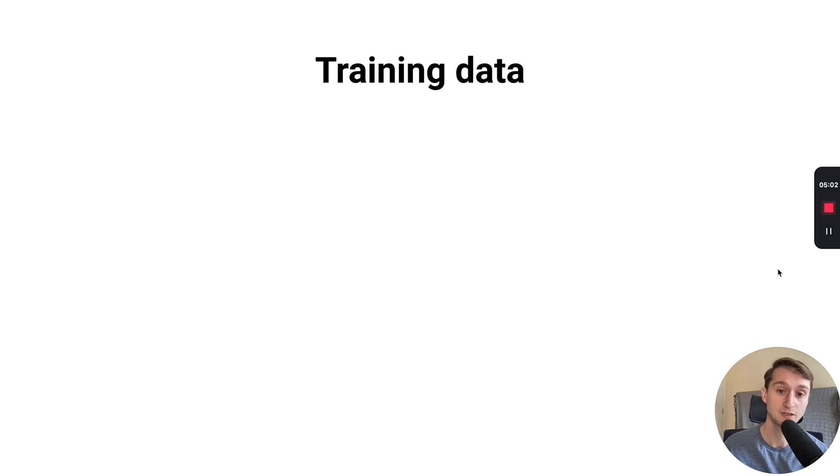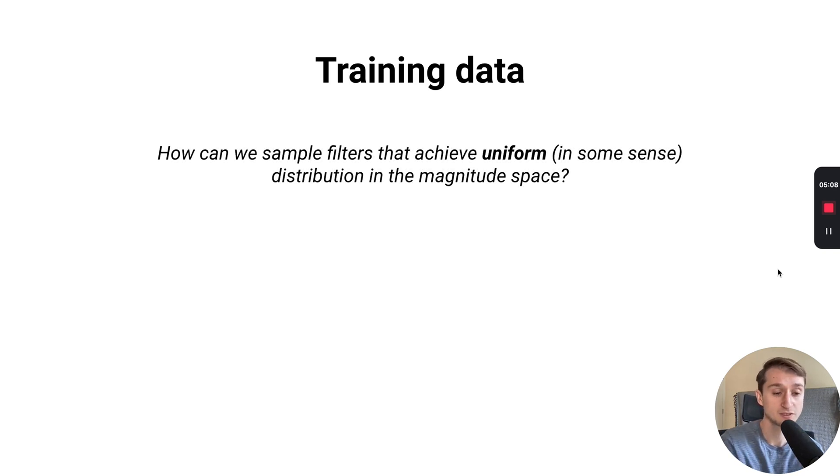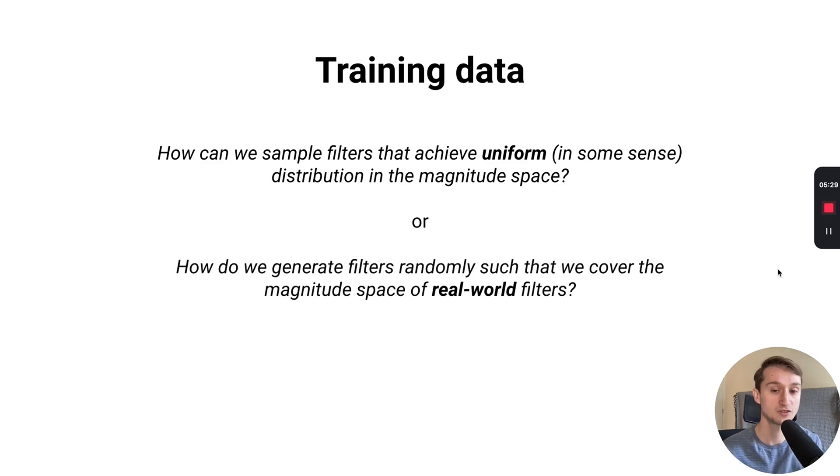But as with any deep learning approach, we need a way to train the model with some data. We can view this in a few different ways. One thing we may want is some way to generate random filters that have a uniform distribution in the magnitude space, so we have a uniform distribution in the input space of our neural network, so that given any type of input from the user, we would have seen something like that during training. Another view could be that we want to generate filters randomly that cover at least the space of real-world filters. But it turns out that both of these are actually quite difficult and non-trivial to answer. We devoted a significant portion of our work looking into this problem of generating the training data that would generalize to actual real-world applications.